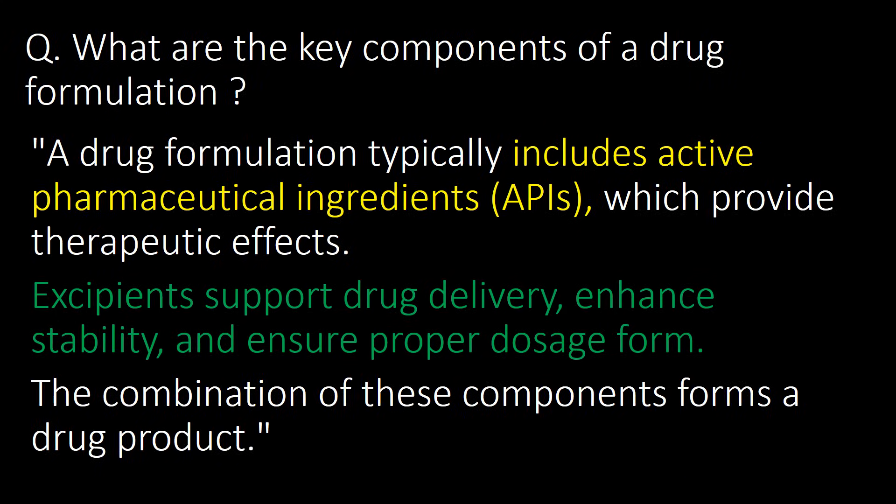What are the key components of a drug formulation? A drug formulation typically includes active pharmaceutical ingredients (APIs), which provide therapeutic effect, and excipients that support drug delivery, enhance stability, and ensure proper dosage form. The combination of these components forms a drug product.